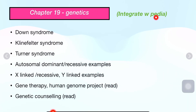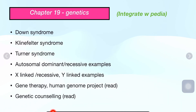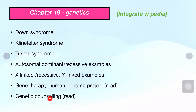You can integrate with genetics — topics include Down syndrome, Klinefelter's, Turner's syndrome, autosomal dominant and recessive examples, X-linked dominant and recessive examples. These have mnemonics available. Other genetics topics: gene therapy, Human Genome Project, and genetic counseling. This is an integrated chapter with PSM and Pedia — read it once and write it.